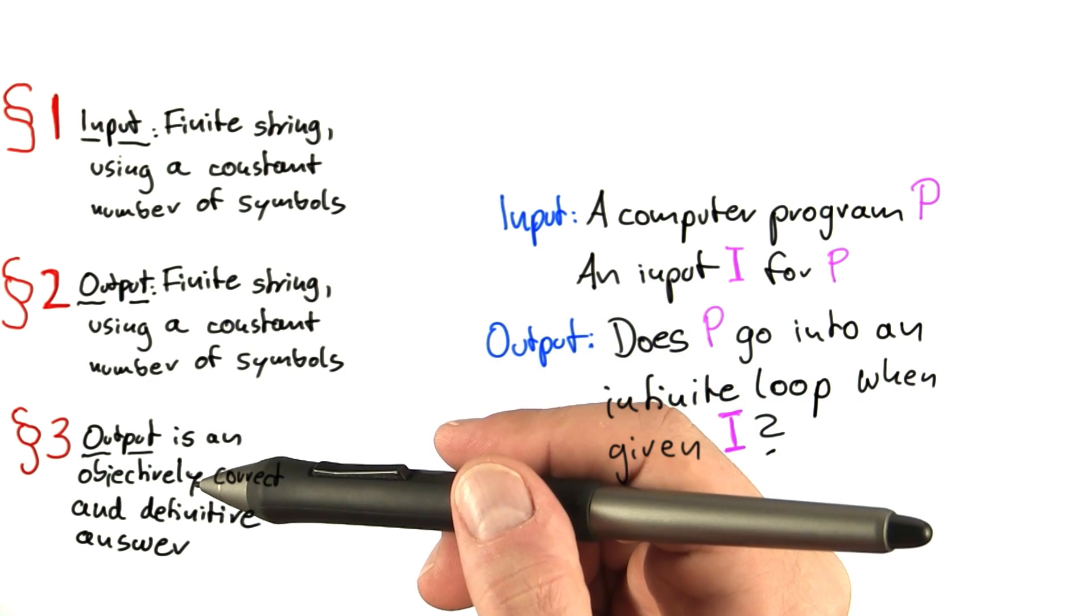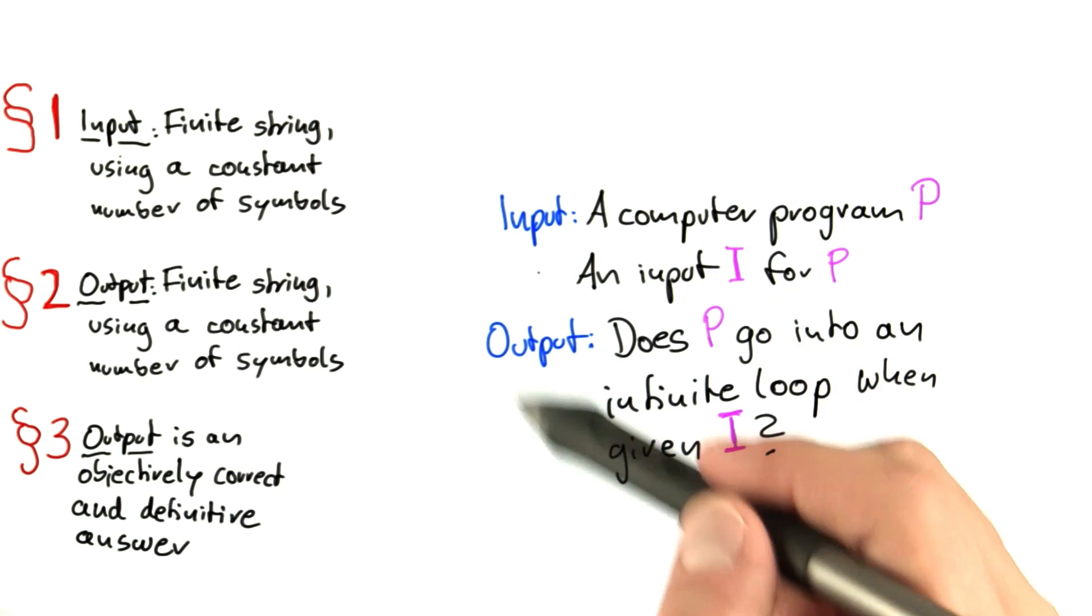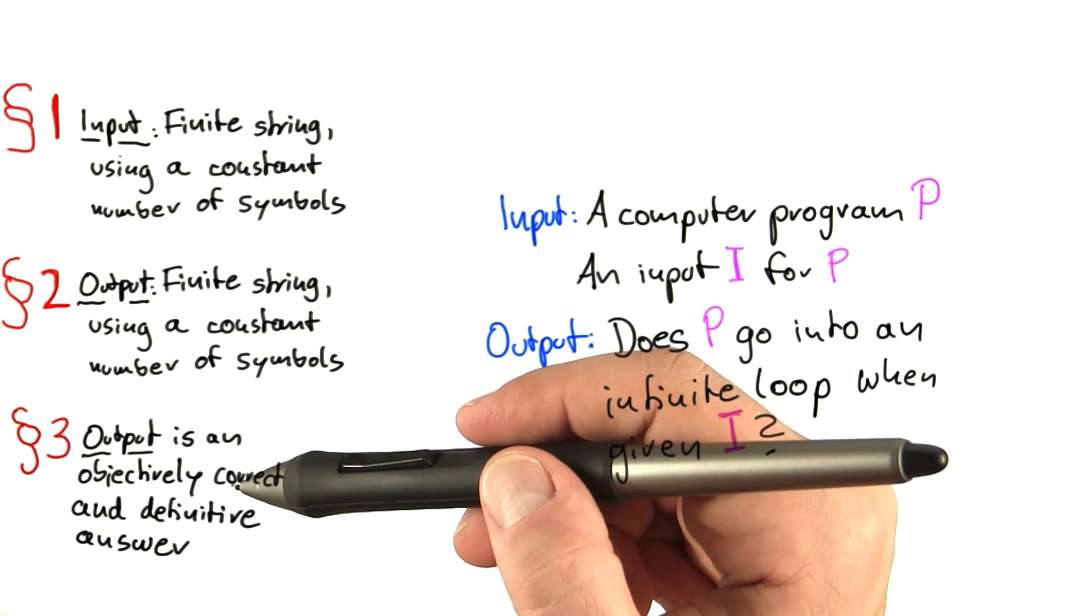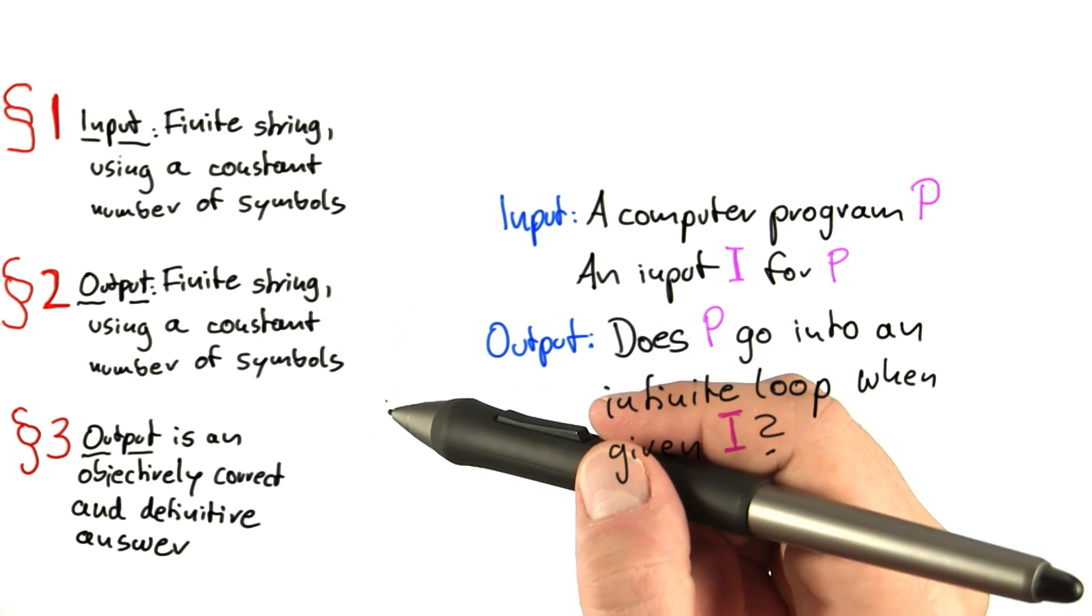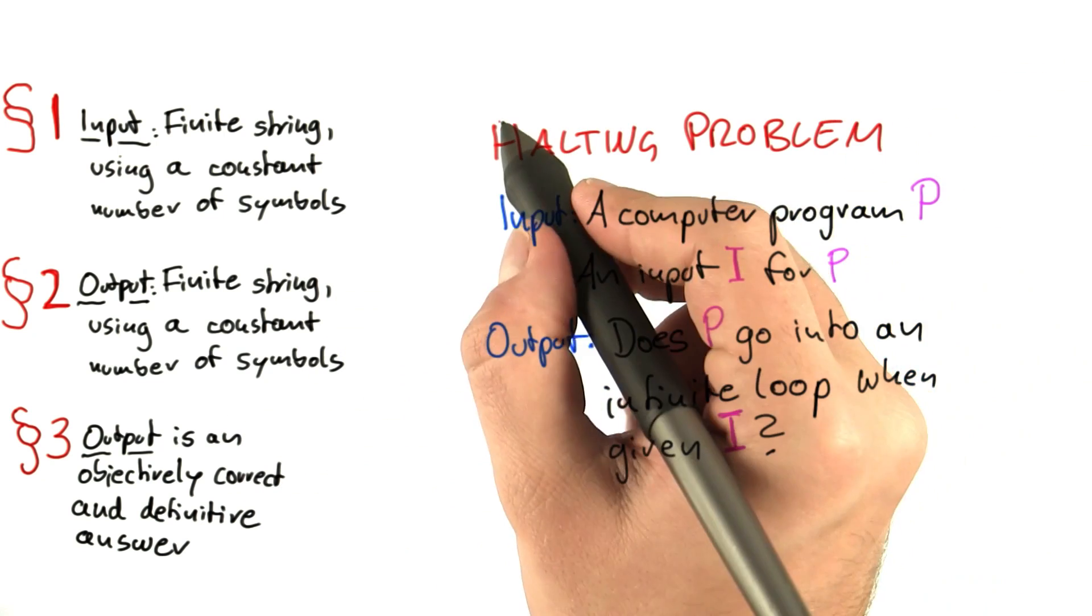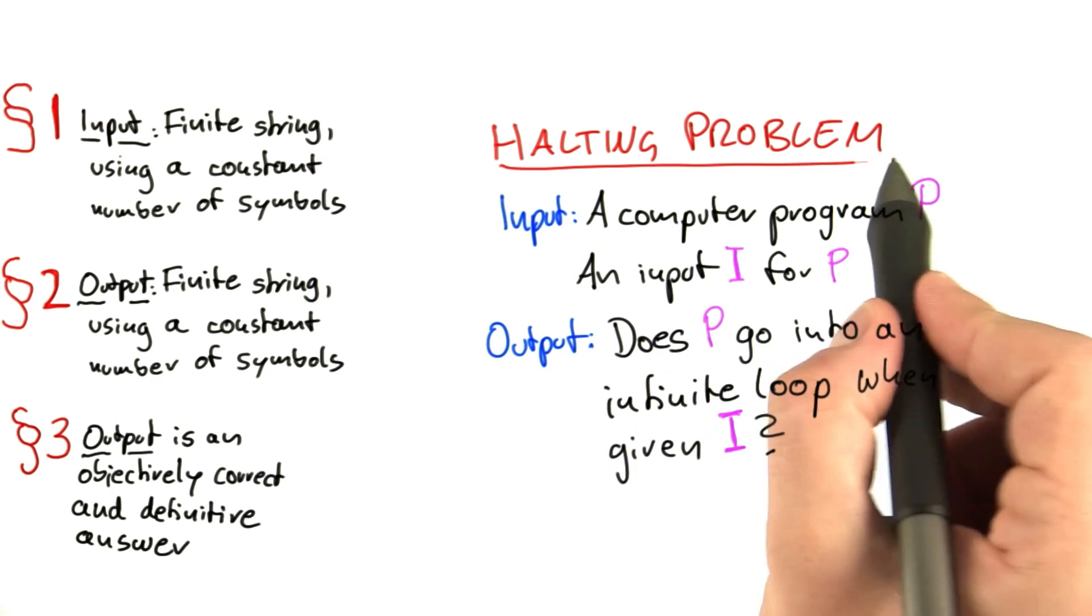And, of course, the output is also objectively correct because we're talking about deterministic machines here. So, you can easily check if the program, indeed, will go into an infinite loop if the computer tells you where the problem is. And this problem is known as the famous, and it's really famous, halting problem.